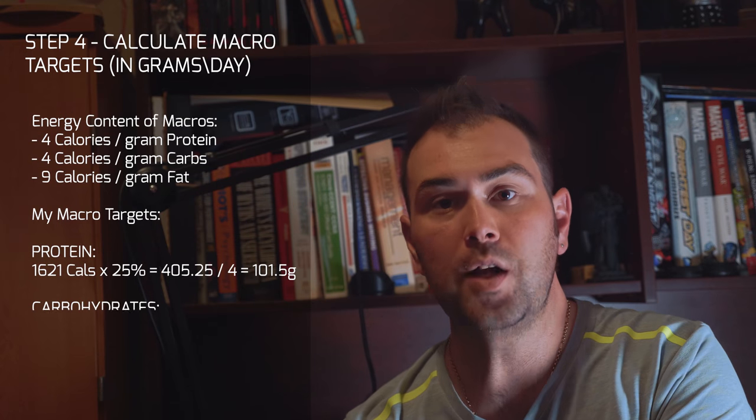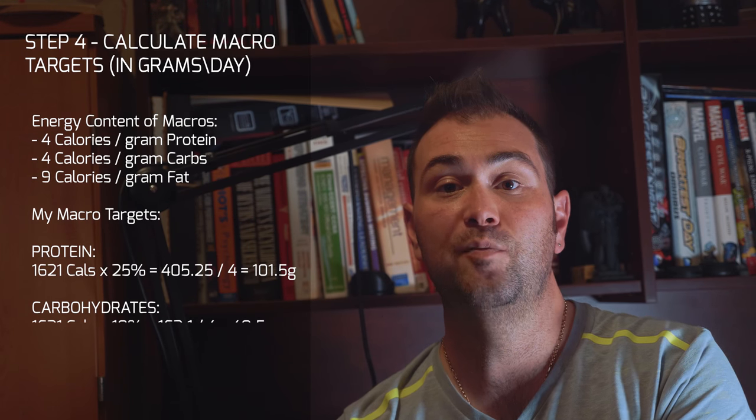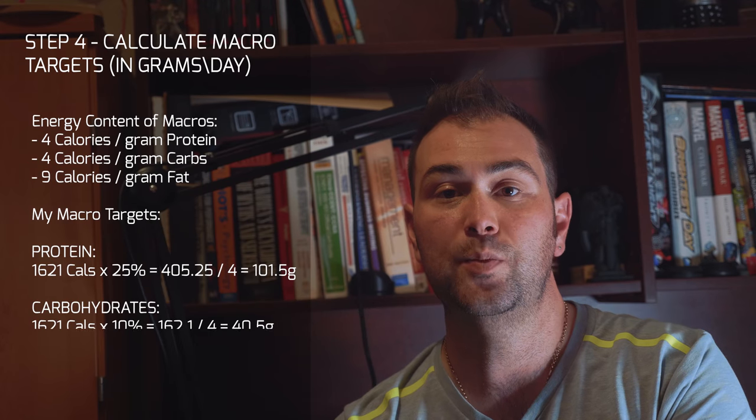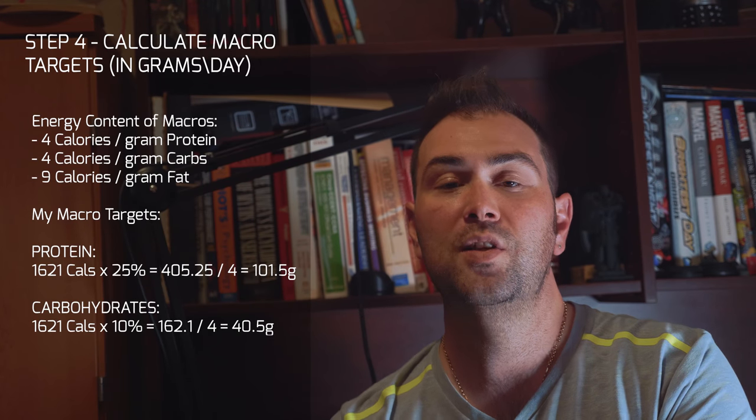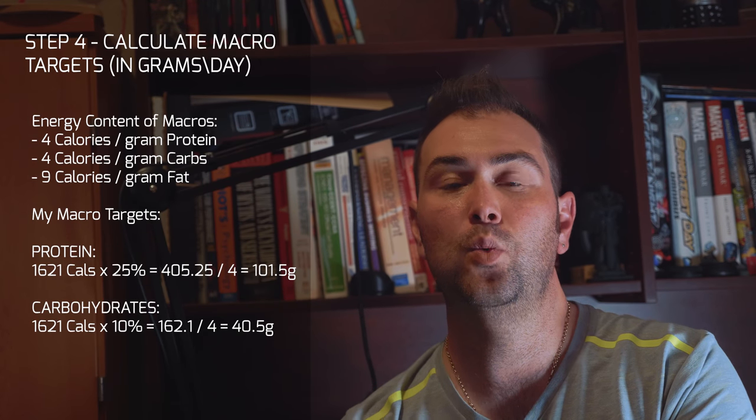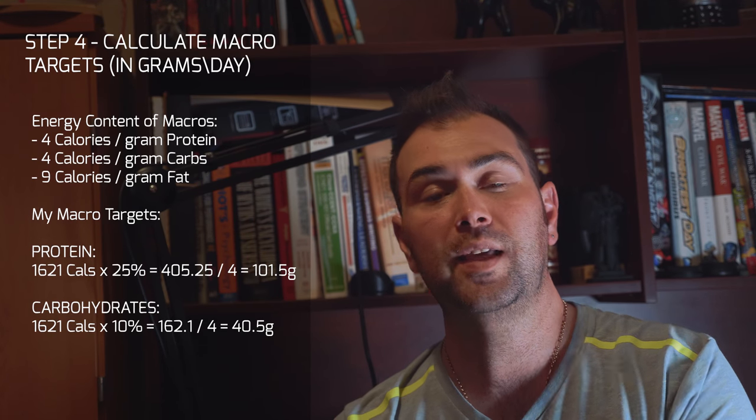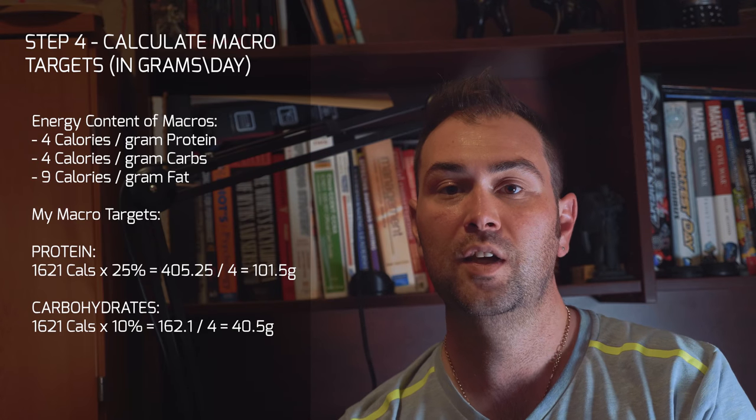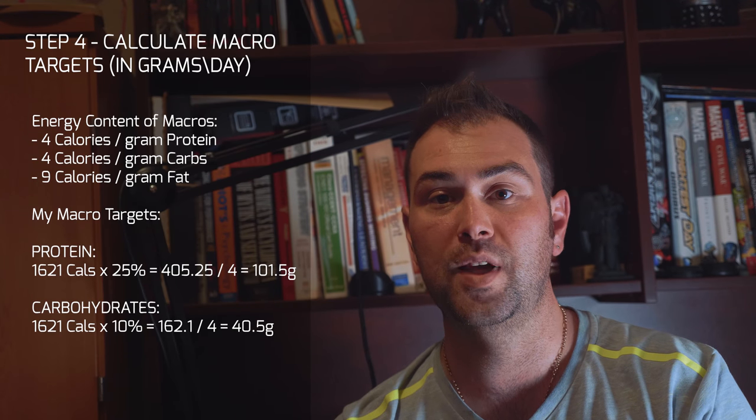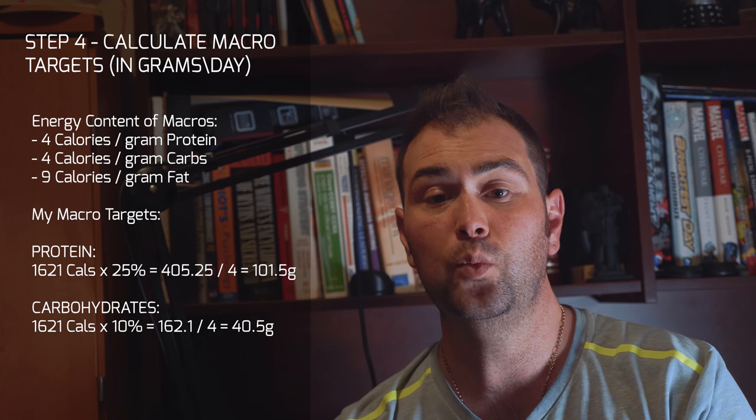Let's talk about carbohydrates. I said that I'd be eating 10% of my 1,621 calories per day out of carbs. So that gives me 162.1 calories of carbohydrates. Again, if I divide that by four, that gives me 40.5 grams of carbohydrates per day.